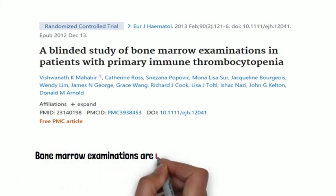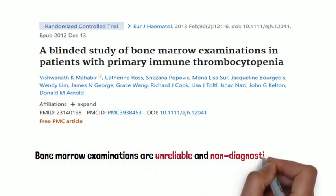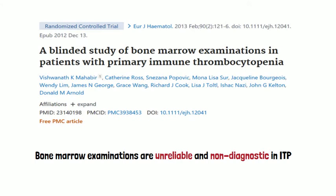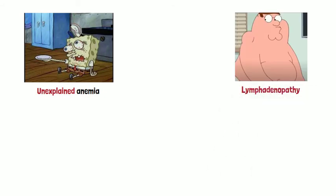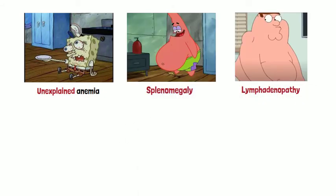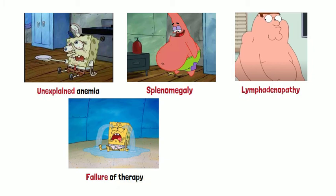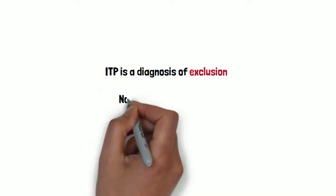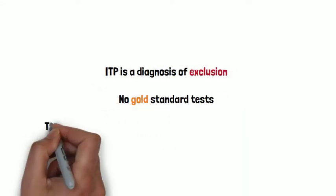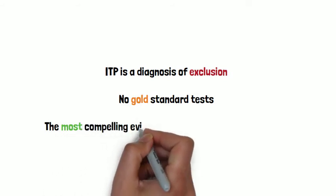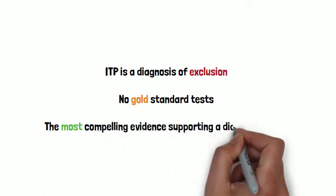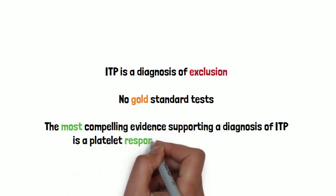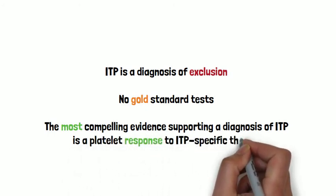Bone marrow examinations are unreliable and non-diagnostic in ITP, and they should only be performed in case of atypical features like unexplained anemia, lymphadenopathy or splenomegaly, failure to respond to initial therapy, or in elderly patients in whom myelodysplasia is suspected. ITP is a diagnosis of exclusion and there are no gold standard laboratory tests for its diagnosis. The most compelling evidence supporting a diagnosis of ITP is a platelet response to ITP-specific therapy.